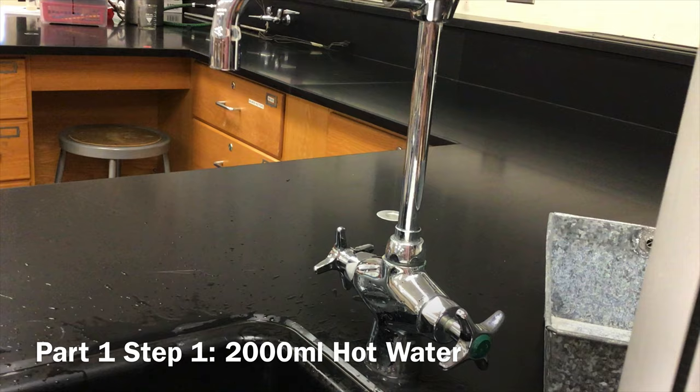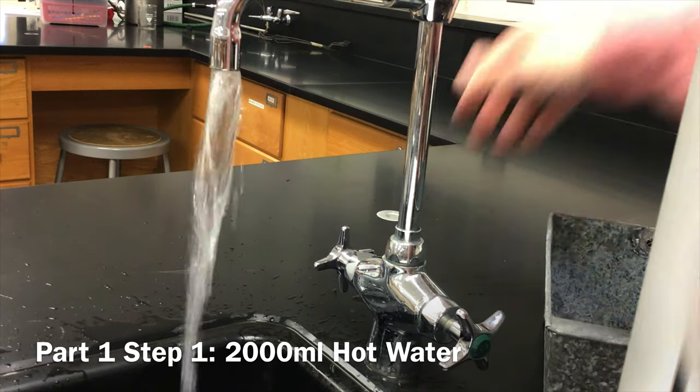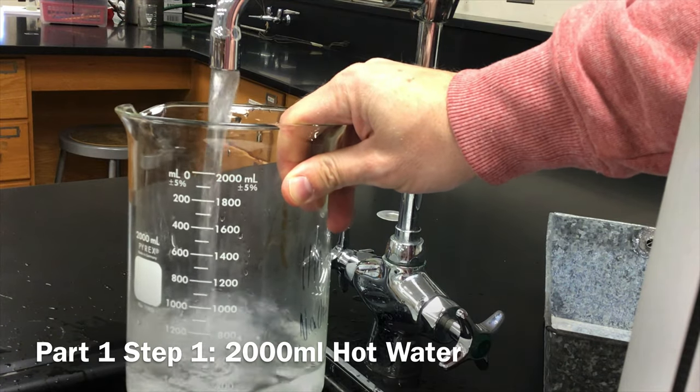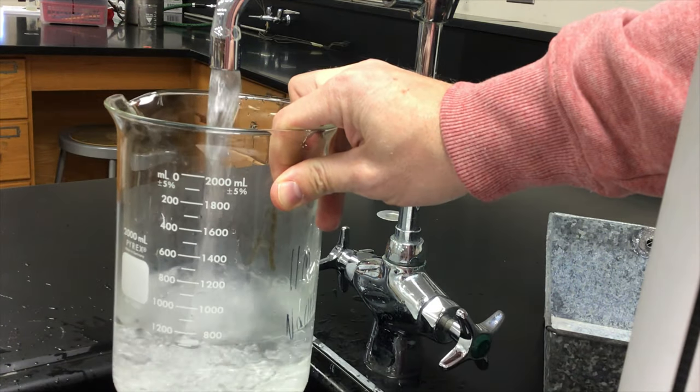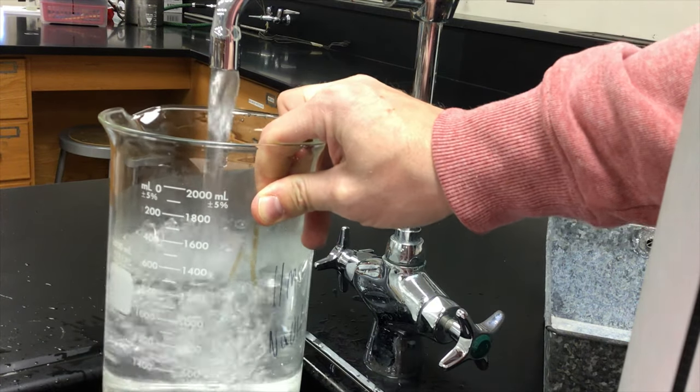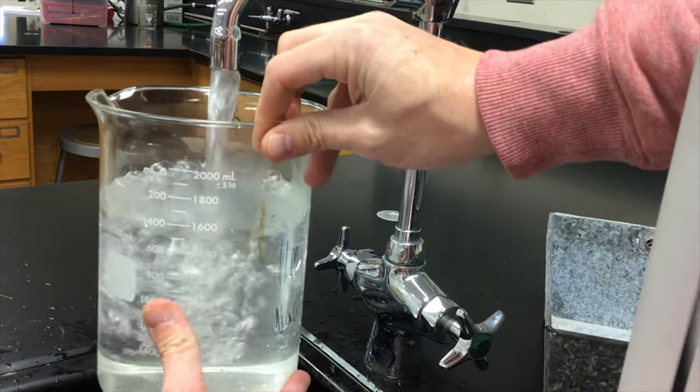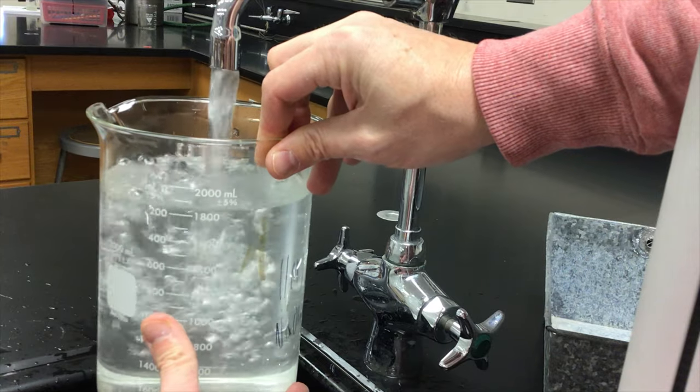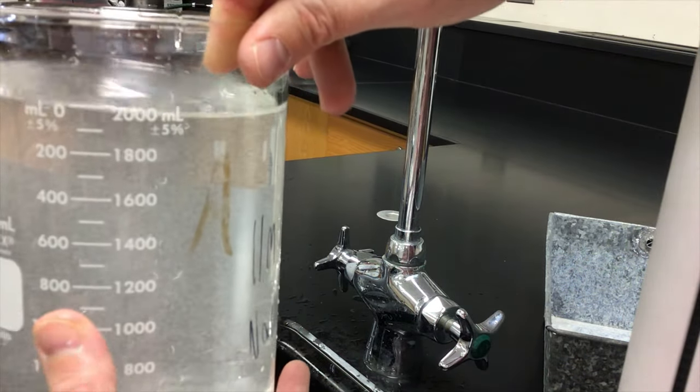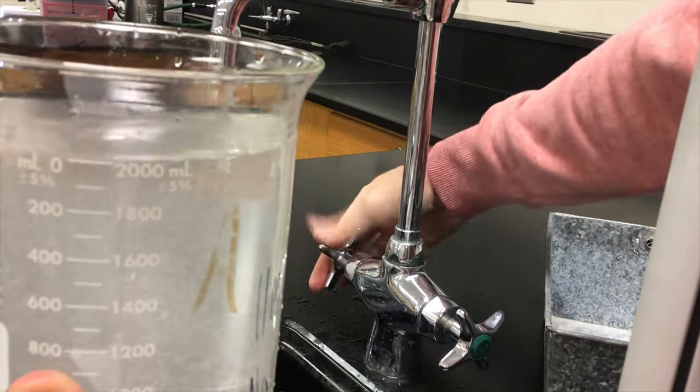Step one, fill a beaker with 2,000 milliliters of hot tap water. This does not have to be exact. We're going to get it as close as possible because if it was exact, we wouldn't be using a beaker. We would be using a graduated cylinder or a volumetric flask or something similar, but did a pretty good job right at 2,000.